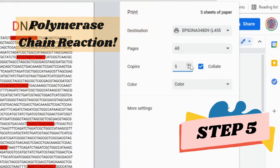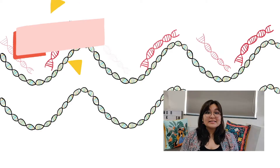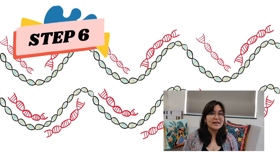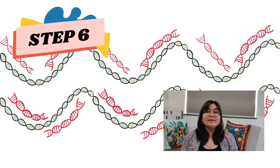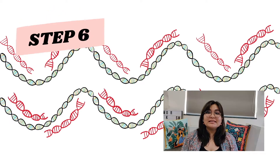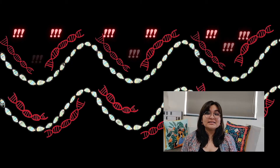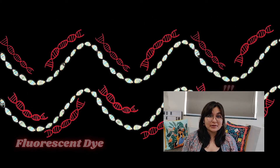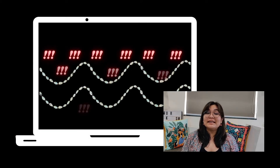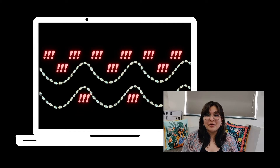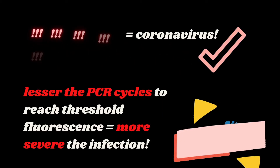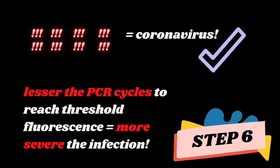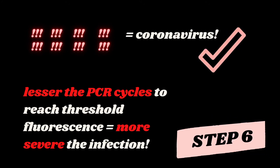As new copies of the viral DNA are built, the marker labels attach to the DNA and release a fluorescent dye, which is measured by the machine's computer and presented in real time on the screen. A certain level of fluorescence tells us the virus is present, and we can also learn the severity of infection.